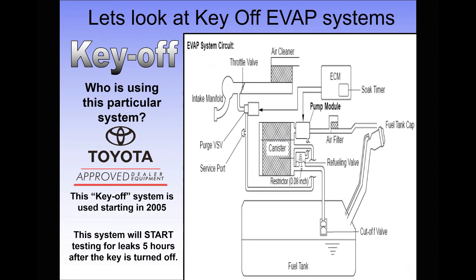This video describes the components and operation of the Toyota key-off EVAP system. This system came into use around 2005 and it's unique in that it uses a vacuum pump inside this pump module on the side of the canister. It uses this to test the EVAP system about five hours after you shut the car off.